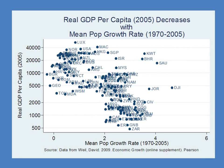Here we're showing the mean population growth rate over the previous 35 years against real GDP per capita. As the Solow model predicts, there is a negative relationship between population growth rate and real GDP per capita. Again, causality isn't necessarily all running from population growth to GDP — perhaps poor countries have more children because that's one way to save for retirement. Nevertheless, the prediction is consistent with the Solow model.